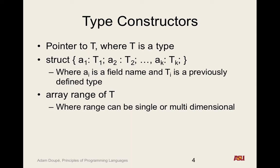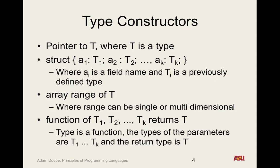We can also define functions — functions have a type. What would the type of a function be? The return type and all the parameter types together make up the type of a function. So here we're declaring a function that accepts parameter types t_1 through t_k and returns a type T.